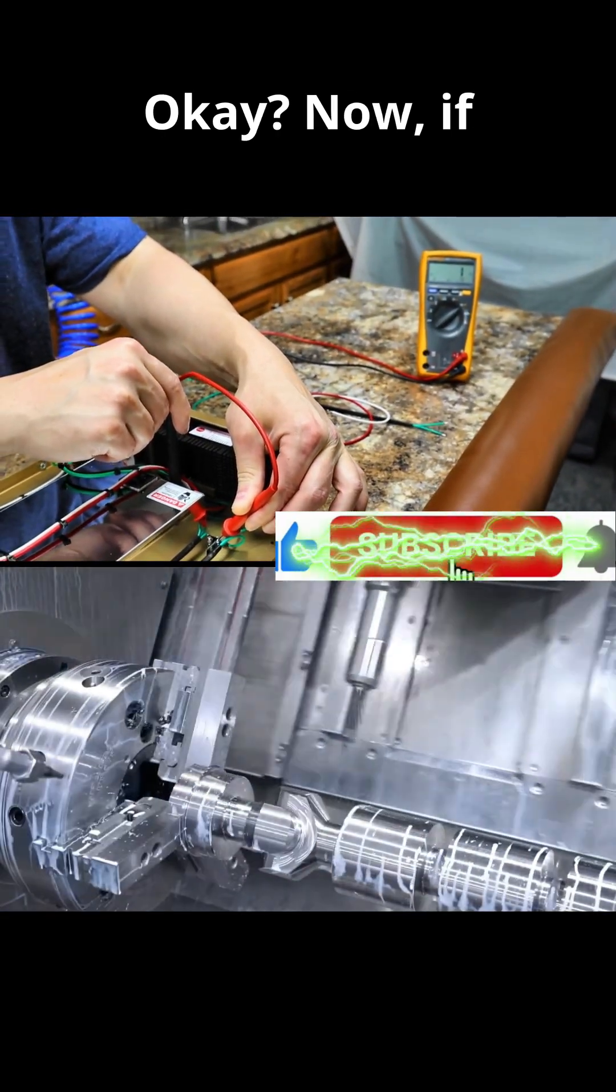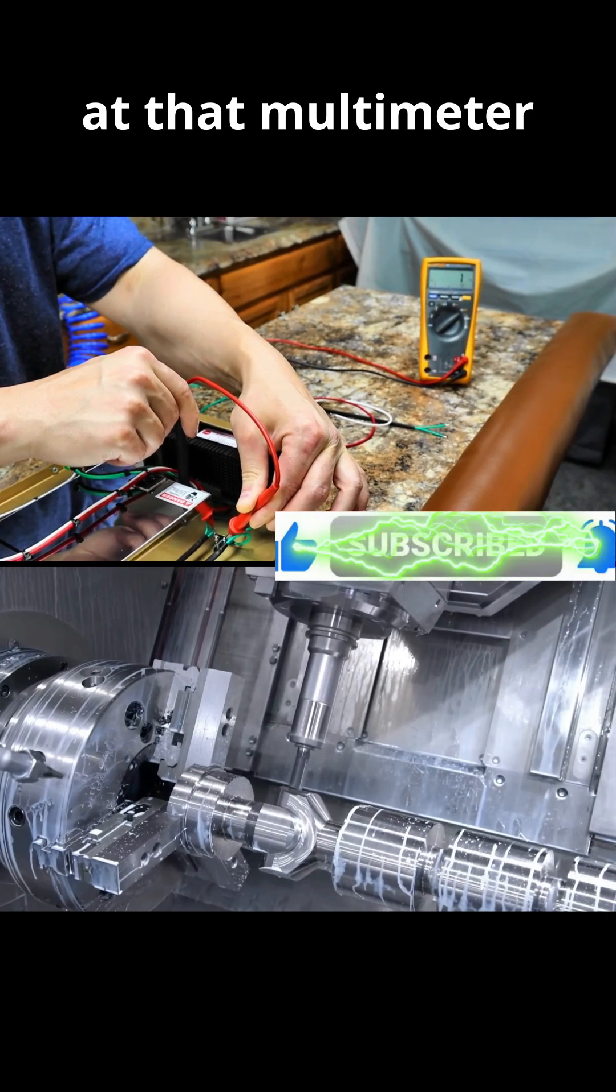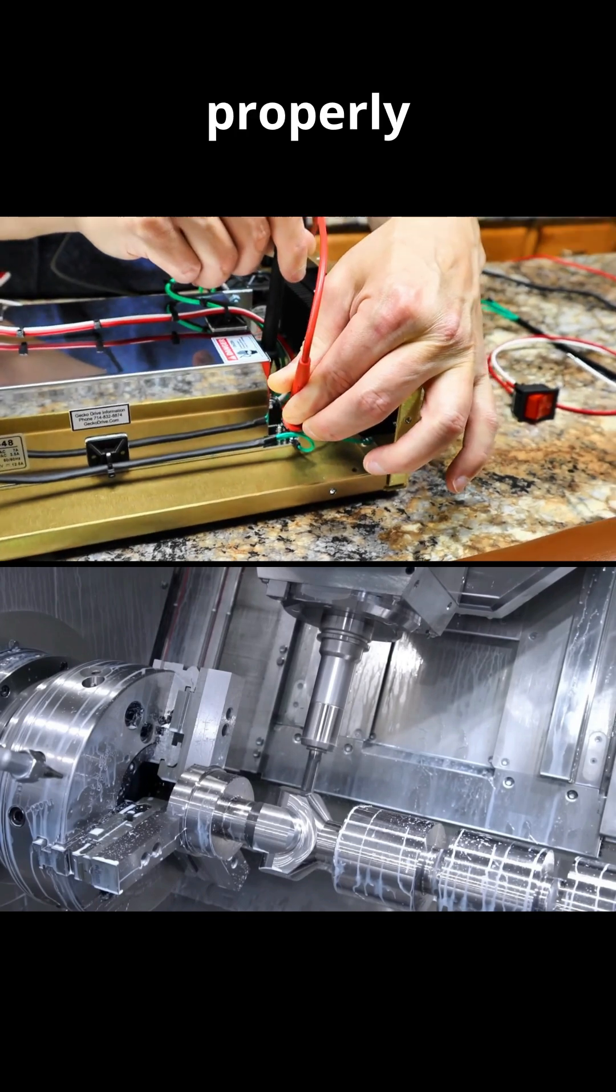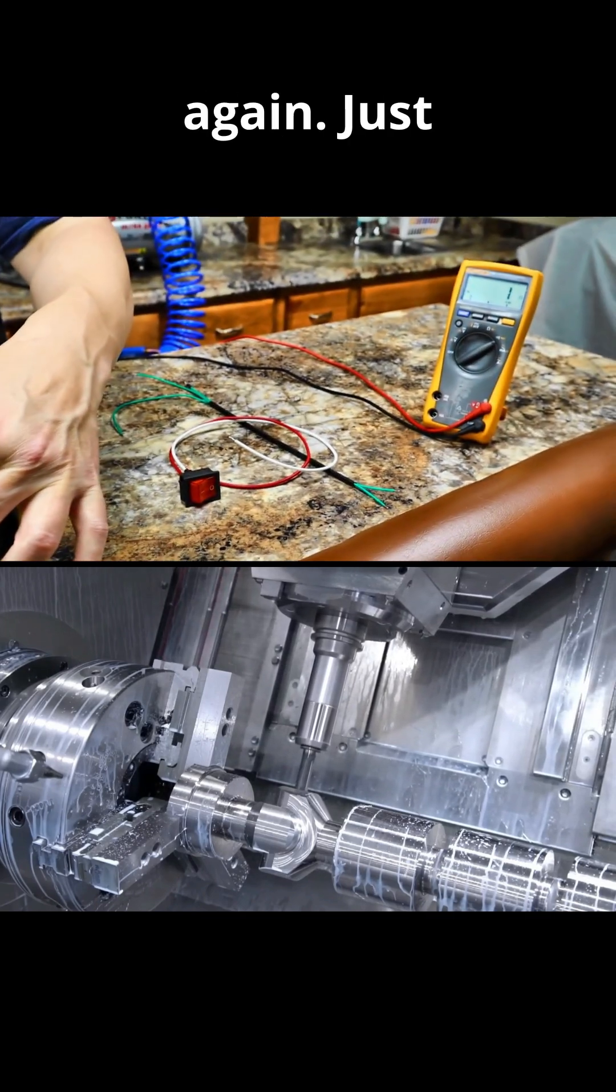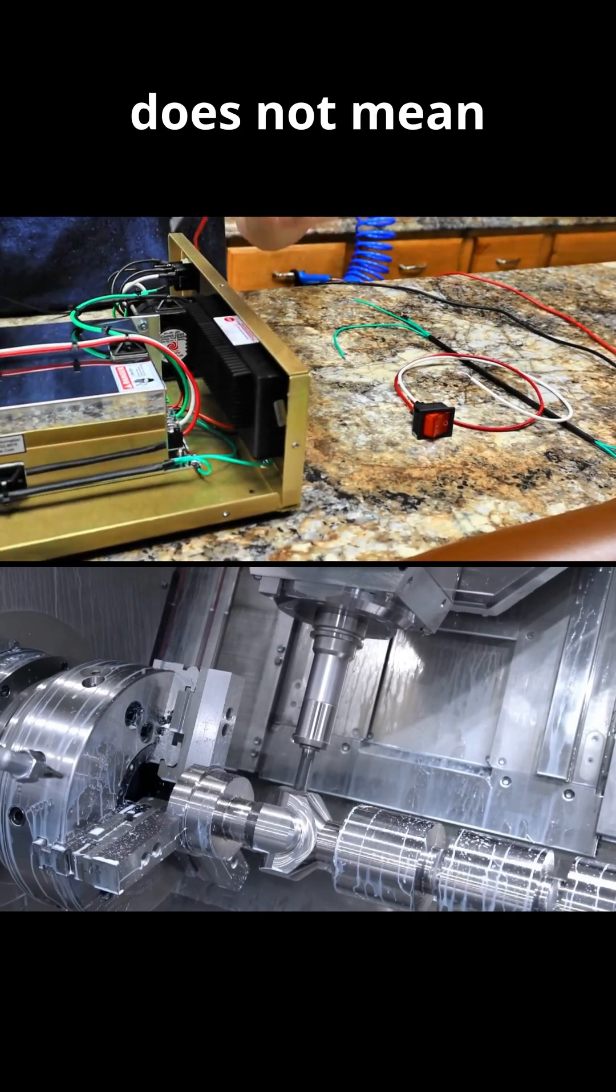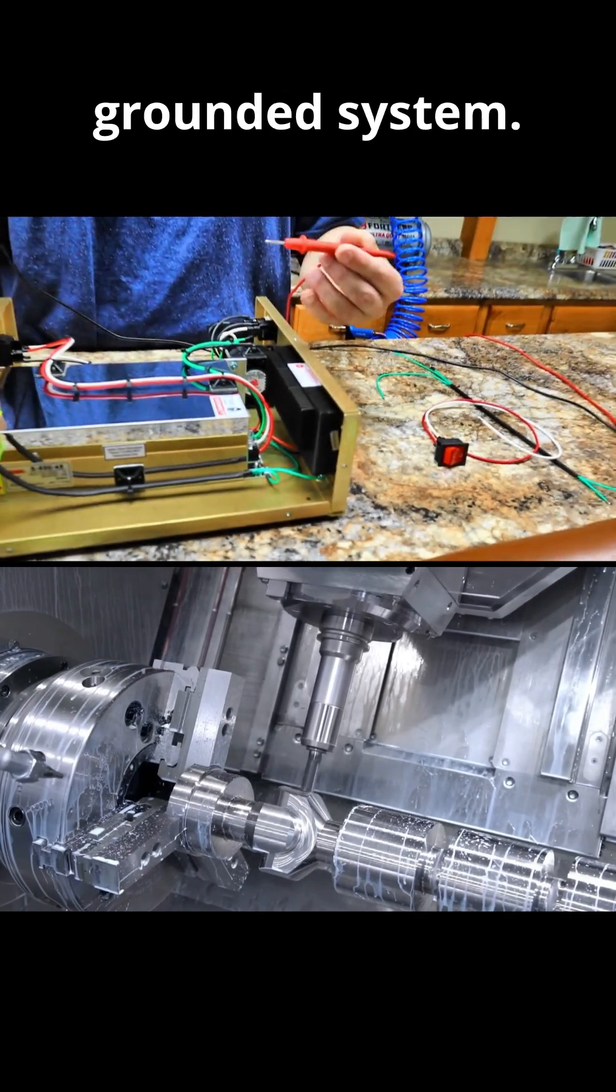Okay, now if you guys look at that multimeter and you see one or anything three or under, you are properly grounded. I'll say that again. Just because you have continuity does not mean you have a grounded system.